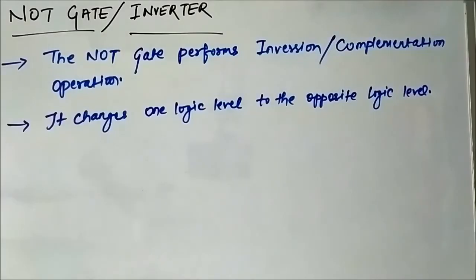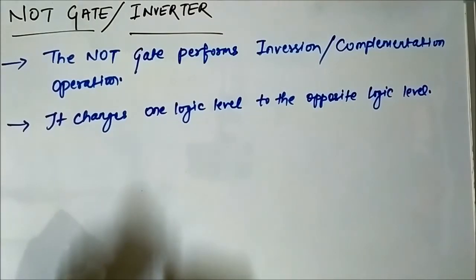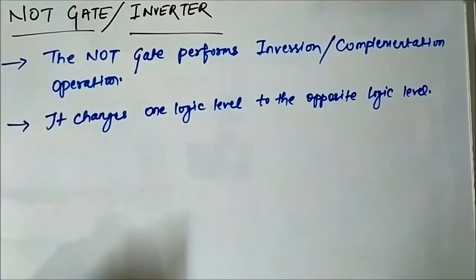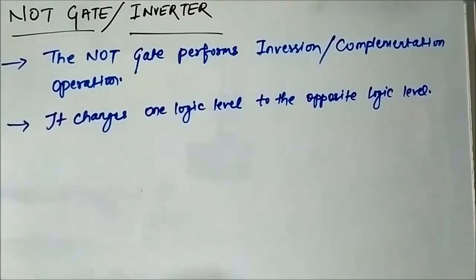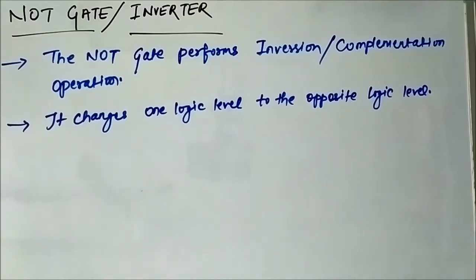The first logic gate we are going to study is the NOT gate, which is also called the inverter. It performs the inversion or complementation operation, which means it changes one logic level to the opposite logic level.